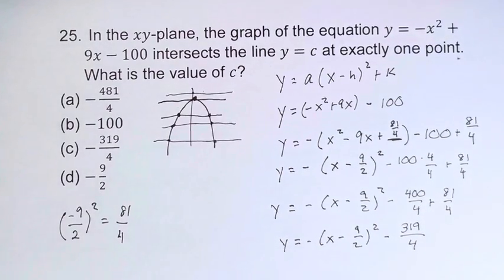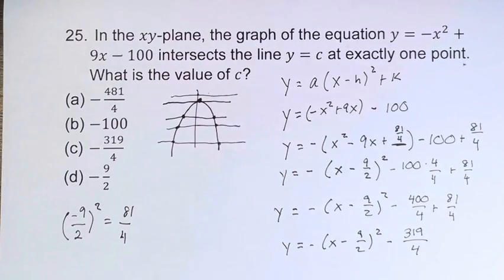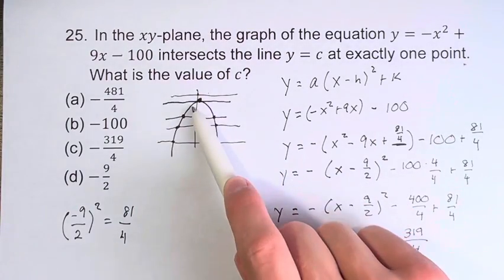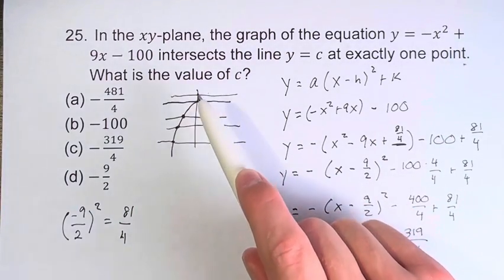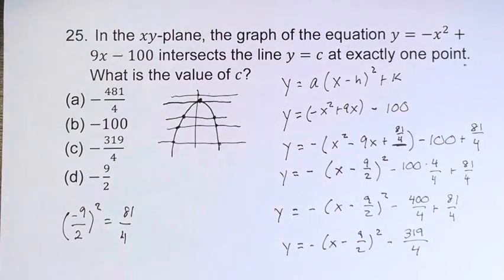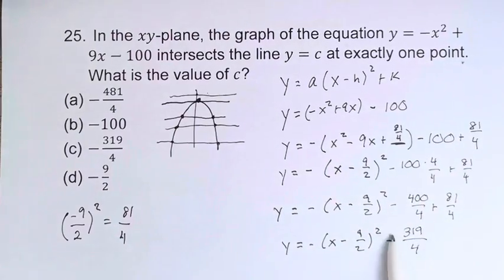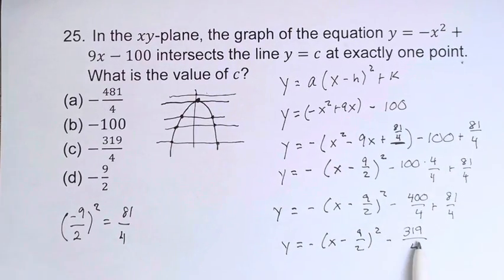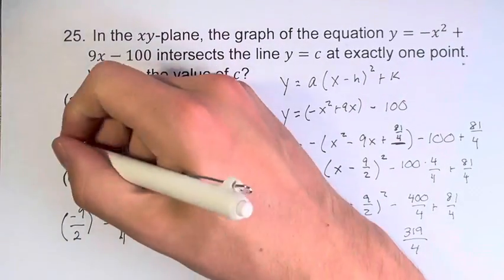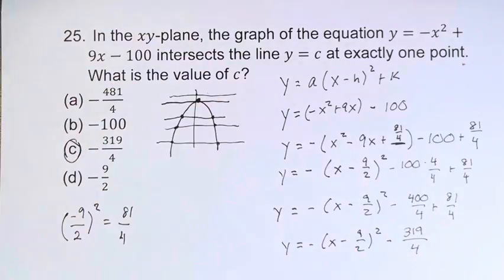As stated at the beginning, we're looking for the y value of the vertex, which is k. So k equals negative 319 over 4, which means c equals negative 319 over 4. That's our final answer.